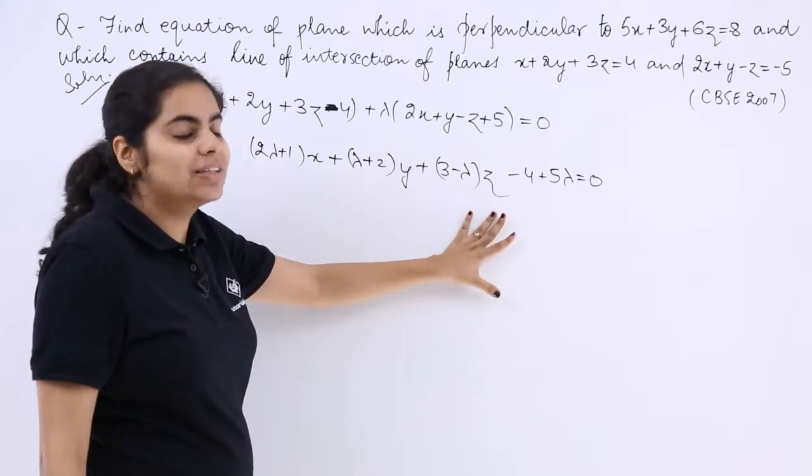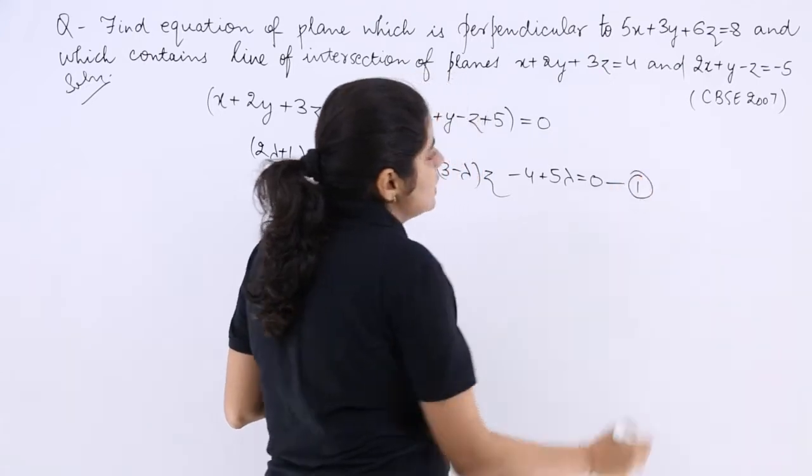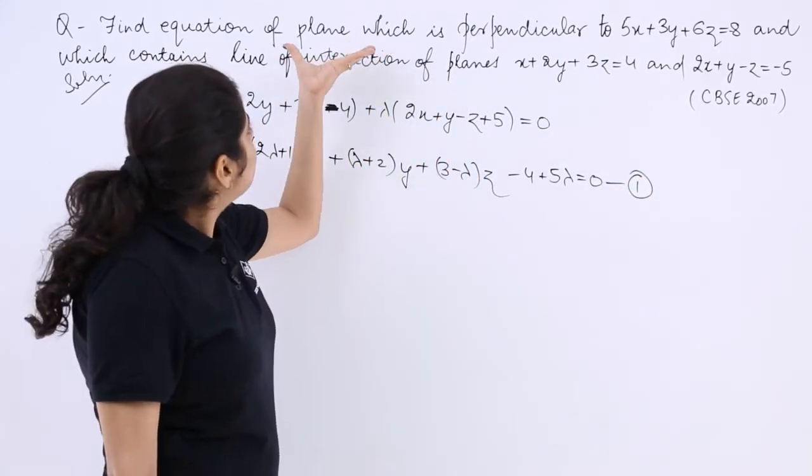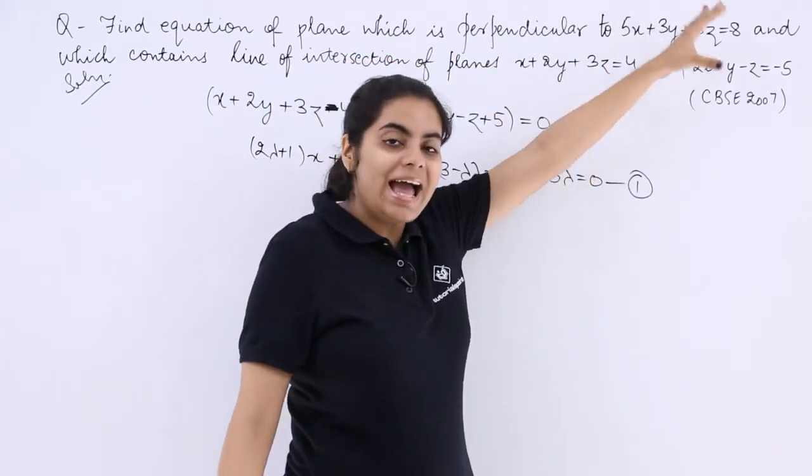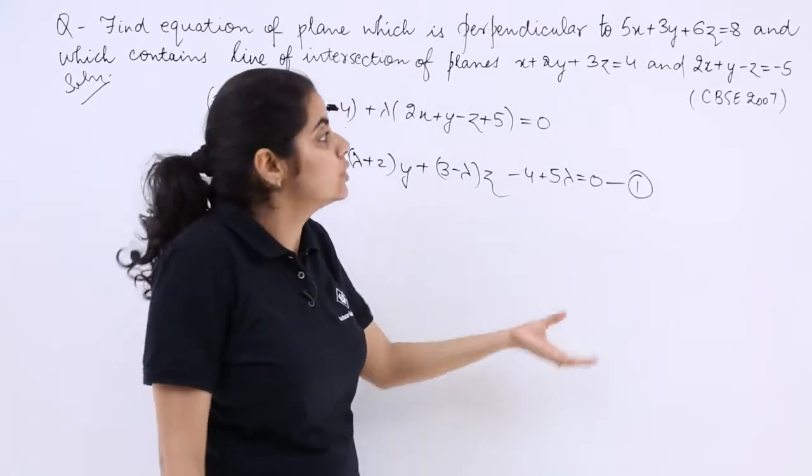We have this equation which has come out. Let us name this as equation number 1. According to the question, we have to find equation of a plane which is perpendicular to this.